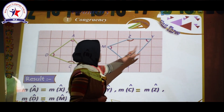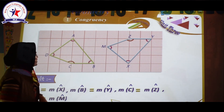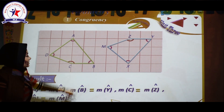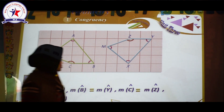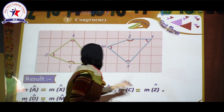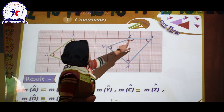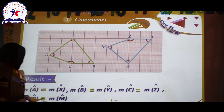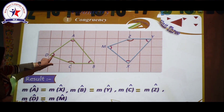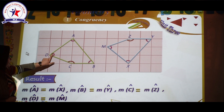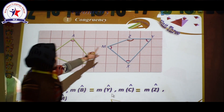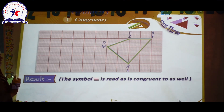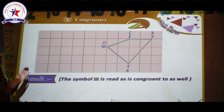We have the same measure. The measure of angle C here, an obtuse angle, is exactly the same as the measure of angle Z. C and Z have the same measure. The measure of angle D also has the same measure as angle M. D and M have the same measure — the two shapes again have the same size and the same shape.